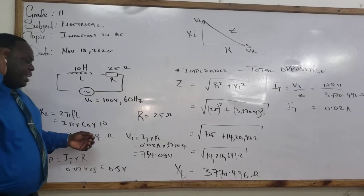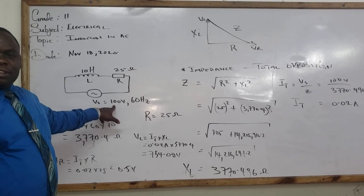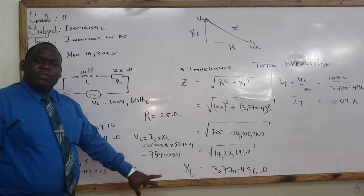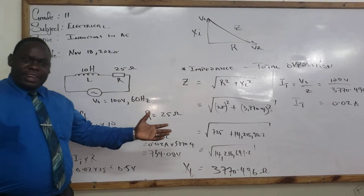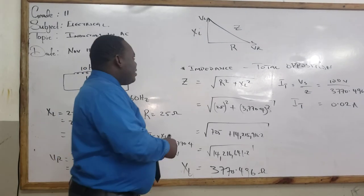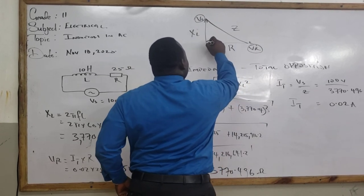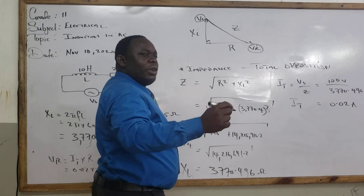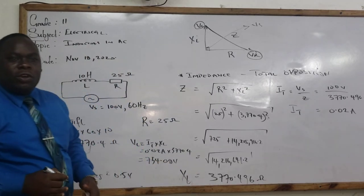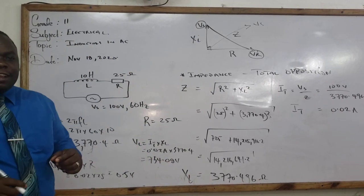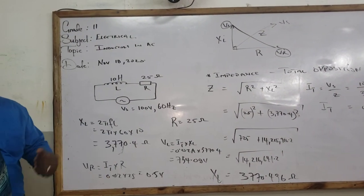So a person might say, it doesn't make any sense because we have a supply of 100 volts. So how come we have 754 volts being dropped across the inductor? It makes no sense. You're following? Yes, sir. But you need to remember, Mr. Fraser, that VL is out of phase. 90 degrees. So where would be our Vs? Our Vs is at some point between our VR and our VL. And that is what explains, ladies and gentlemen, why we are using the Pythagorean theorem.